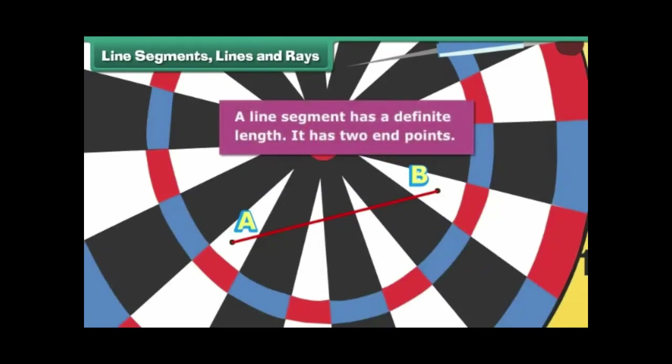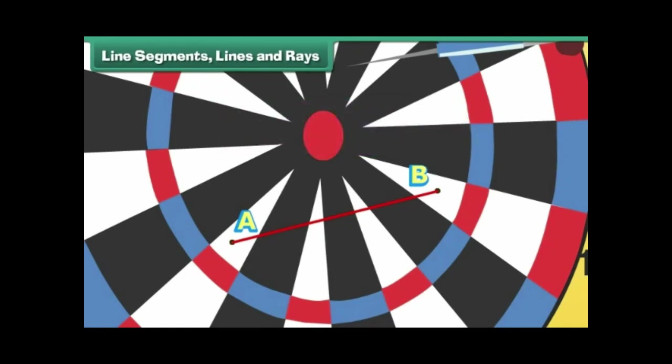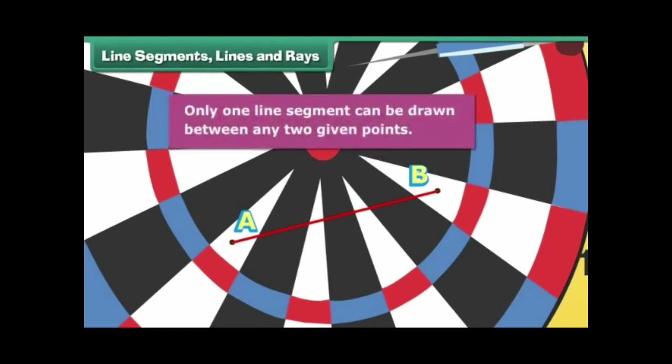We name the two points A and B. We now join them with a line segment. A line segment has a definite length and two endpoints. Can we draw another line segment between points A and B? No! Only one line segment can be drawn between any two given points.